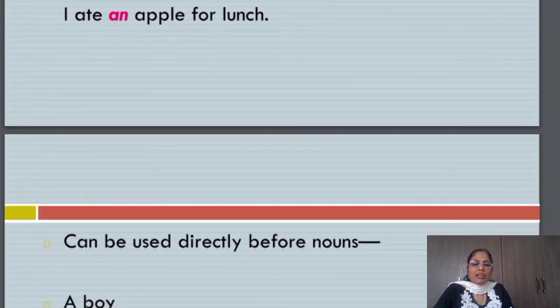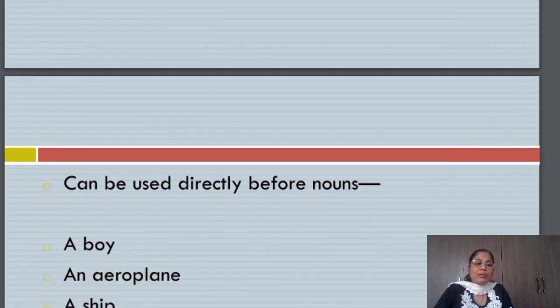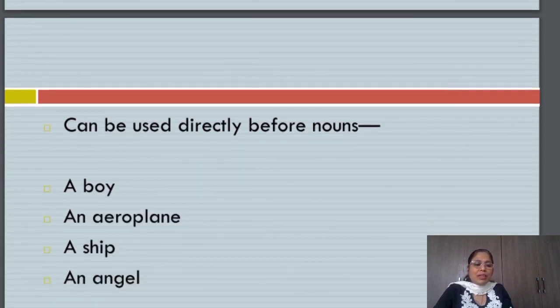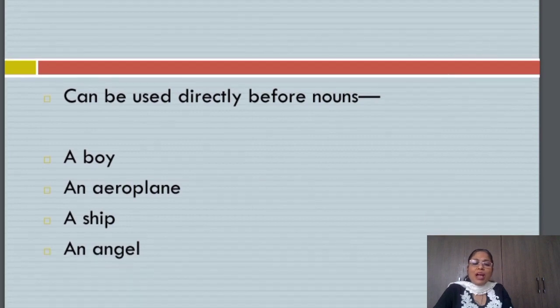A or an can directly be used before nouns. For example, a boy, an aeroplane, a ship or an angel. But it is not as simple as that.